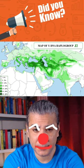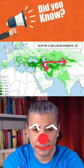Let's take one haplogroup found in India with high frequency: J2. Movement of human masses is also influenced by the landscape — mountains, seas, swamps, deserts, and so on. But we can still see the general trends, and you can easily say that this haplogroup originated in territory that is external to India.